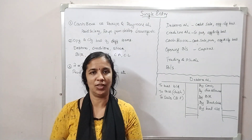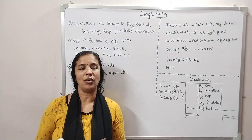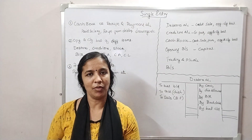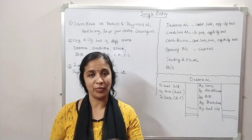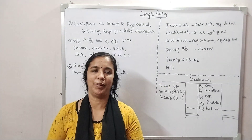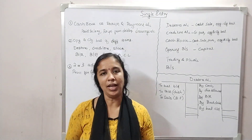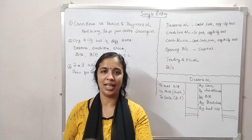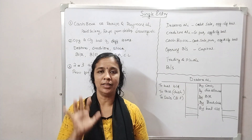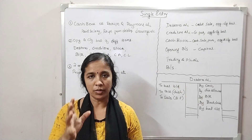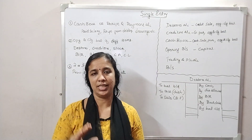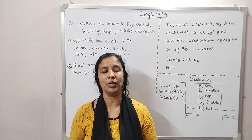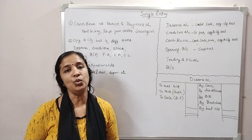We have to convert from a single entry system to a double entry system. In the double entry system, we already have financial statements. We have to prepare a balance sheet, and in that case, we have to convert from a single entry system. If we have a single entry system, we have to prepare 3 to 4 accounts.